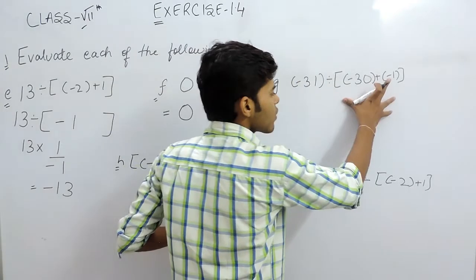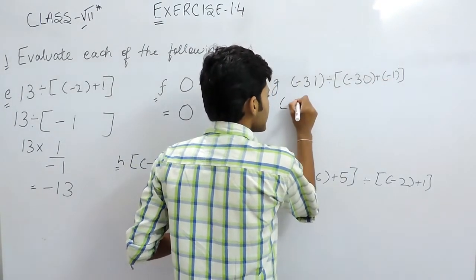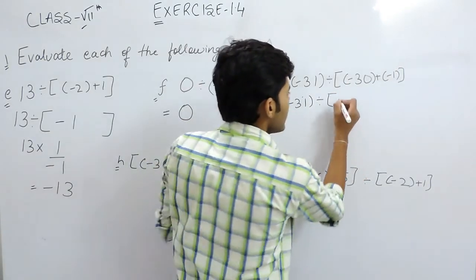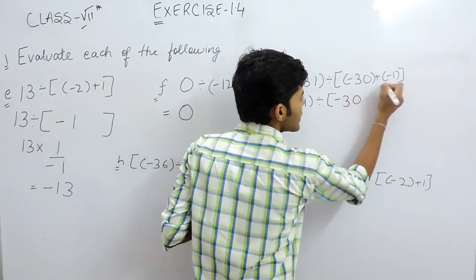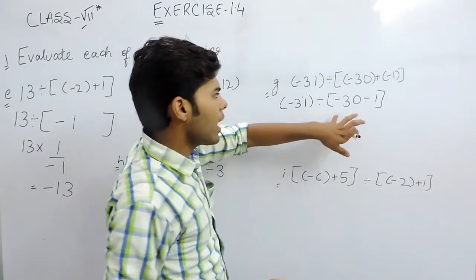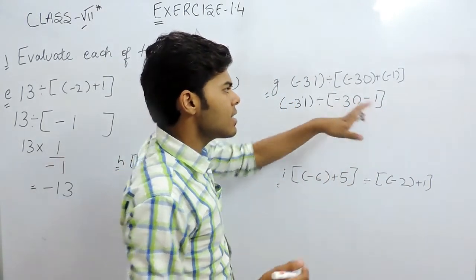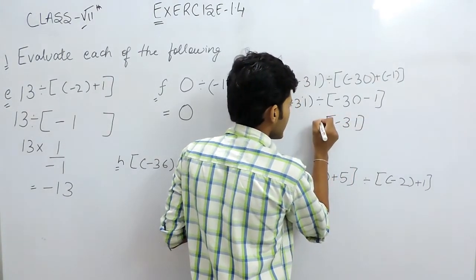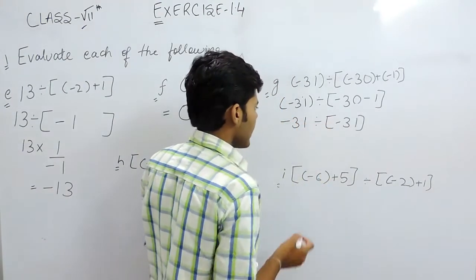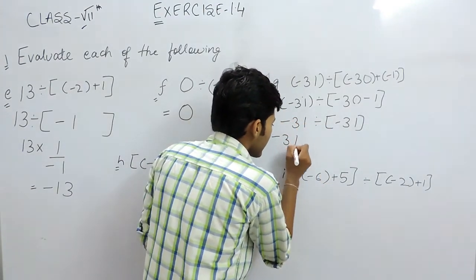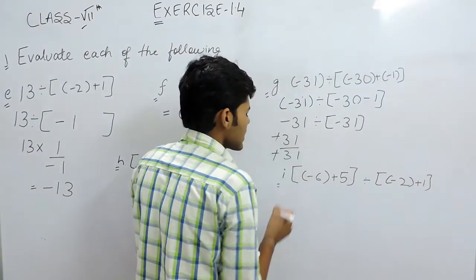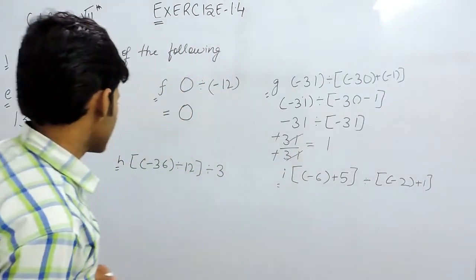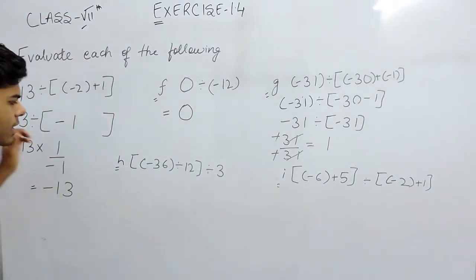Now this one will again solve the bracket first. Minus 31 and divided sign will be as it is. This will be minus 30 plus, and minus minus minus 1. So we all know that minus minus plus, plus plus plus sign is minus. So it will be minus 31 divided by minus 31. We can write this like minus 31 upon minus 31. Minus minus gets cancelled out and 31 one time. So 1 is the answer.